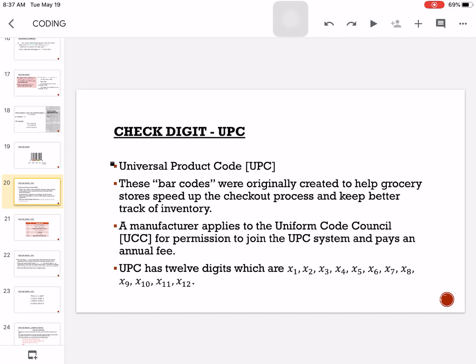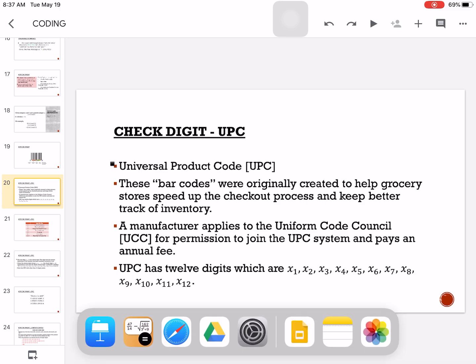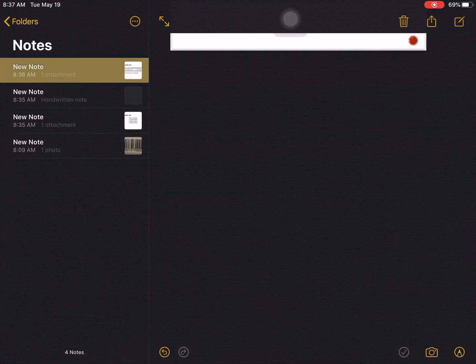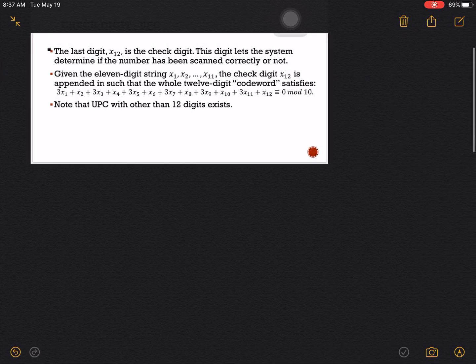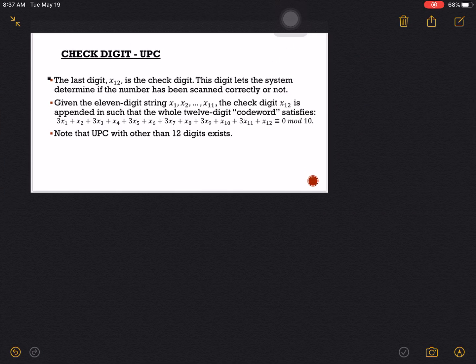So let's have some notes here to consider. Here we have the algorithm: 3x₁ + x₂ + 3x₃ and so on. It says that the sum of the digits here should be congruent to 0 modulo 10.